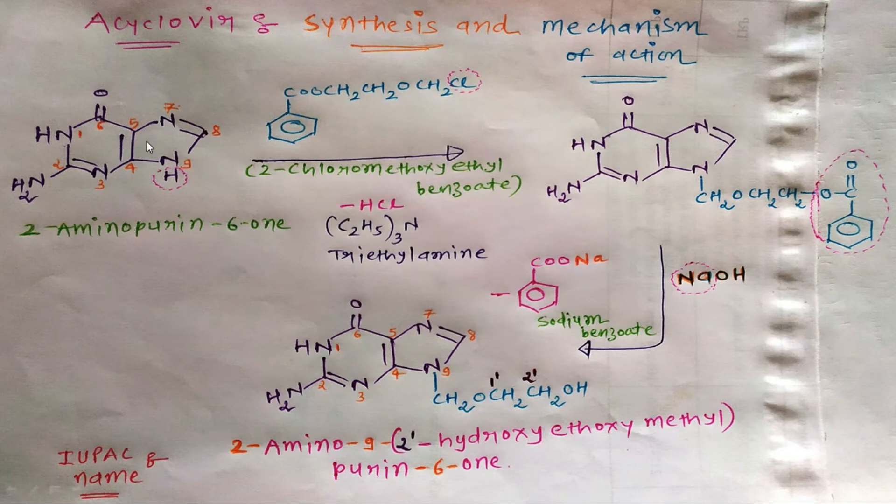The starting material for the synthesis of acyclovir is 2-aminopurine-6-one. This is the purine nucleus. Numbering will start from this nitrogen: 1, 2, 3, 4, 5, 6, 7, 8, and 9. For the IUPAC nomenclature, you have to remember this numbering. Amino is present on the second position and keto group is present on the sixth position.